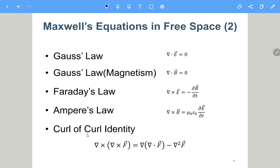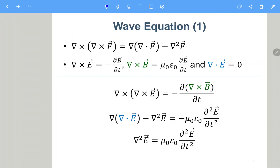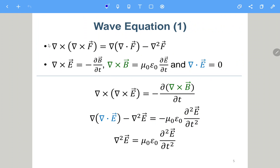We will use an identity called the curl-of-curl identity, which you can check on Wikipedia. If you don't believe it, you can verify it using the gradient operator — take the cross product, apply curl again, and check both sides match. We apply this identity where F is the vector field. We identify Faraday's law, Ampere's law in free space, and Gauss's law in free space.